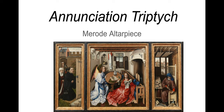This is the Annunciation Triptych, also known as the Merode Altarpiece, attributed to an artist named Robert Campin — or oftentimes attributed to the workshop of Robert Campin in the early 15th century. We think maybe he did this piece along with some apprentices who worked in his workshop. It's a beautiful art piece and a great example of typical Northern Renaissance symbolism and detail.